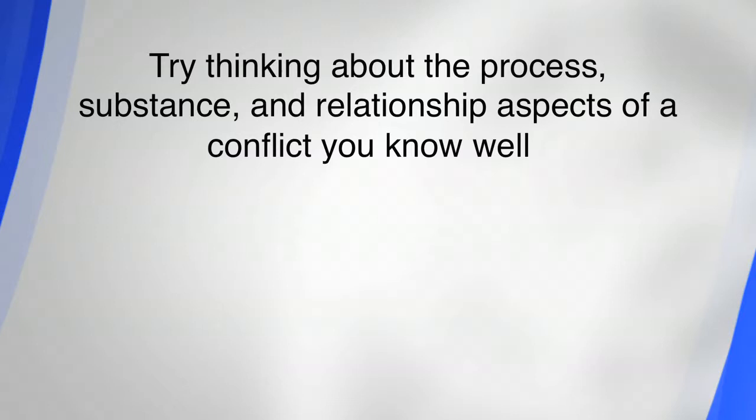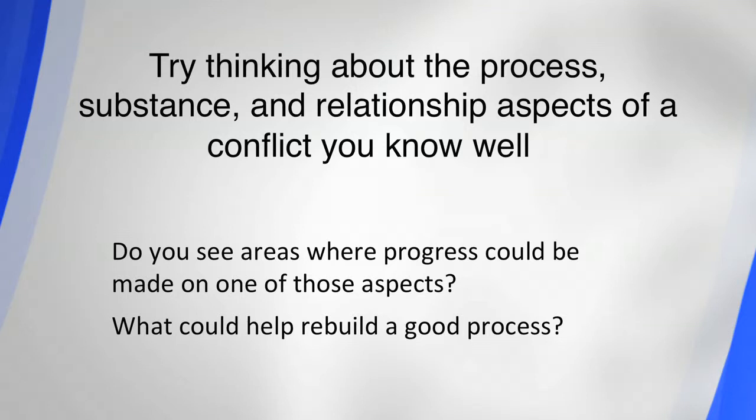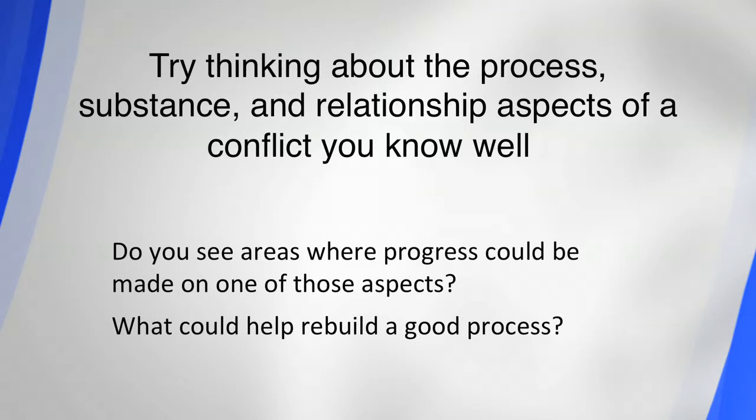In other words, we can't rebuild a relationship fully if we don't build new processes and agree on the substantive matters in dispute. Similarly, we can't agree on substantive matters entirely until we develop new processes and relationships on which those can be based. Try thinking about the process, substance, and relationship aspects of a conflict you know well. Do you see areas where progress could be made on one of those aspects? What could help rebuild a good process — for example, countries might agree to reestablish diplomatic relations. What could help address a difficult relationship — for example, artists might celebrate each other's cultures with a joint cultural festival. What could help address substantive difficulties — an agreement might be reached to settle issues temporarily and put off the final settlement into the future.